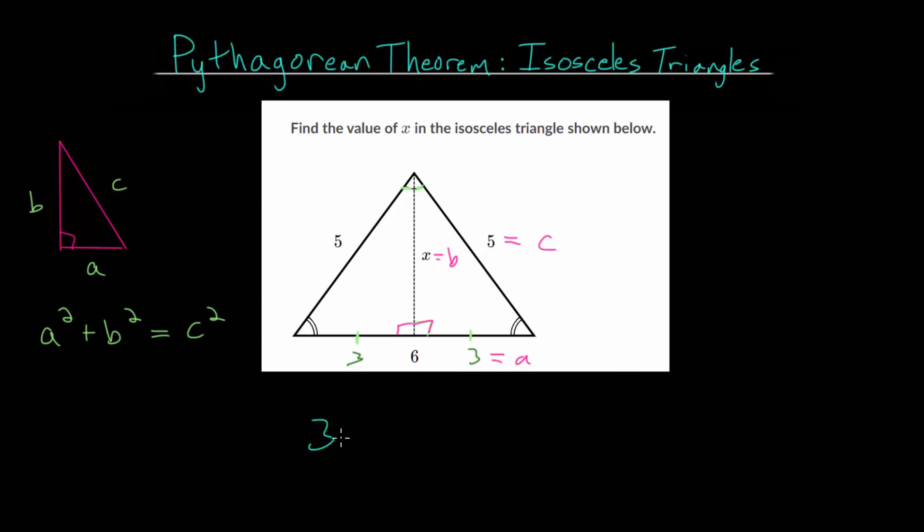So let's set up our equation. We have that A squared, that's three squared, plus B squared, that's x squared, is equal to C squared, or five squared. So three squared, that's just three times three, which is nine, plus x squared is five times five, which is 25.